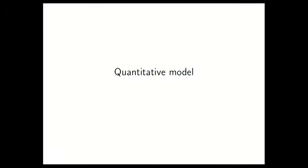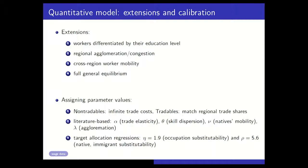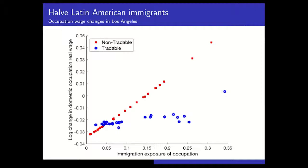We build a richer quantitative model featuring workers differentiated by education, agglomeration and congestion forces at the aggregate regional level, worker mobility across regions, and a full general equilibrium solution. We target the reduced-form estimates to calibrate the main model parameters. We then engineer counterfactuals, beginning with a reduction by half in the number of Latin American immigrants. Let's zoom in on Los Angeles.